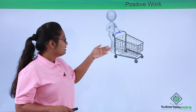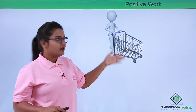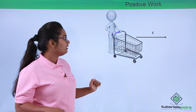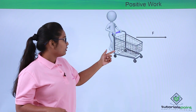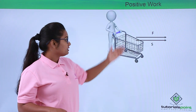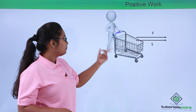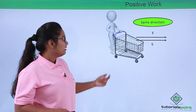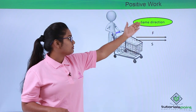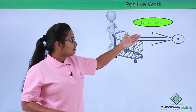Let's take another example. A man is pushing a trolley in the forward direction. The force applied by the man on the trolley is in the forward direction, and the displacement of the trolley is also in the forward direction. So we say the work done in this case is positive.